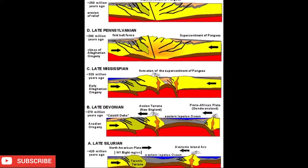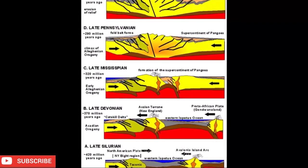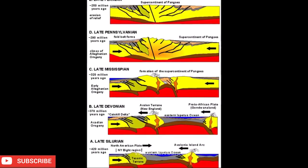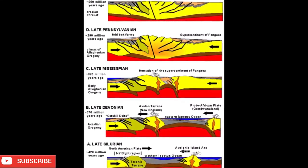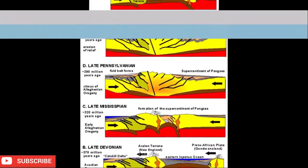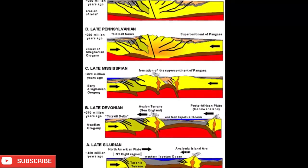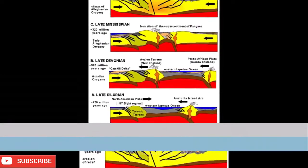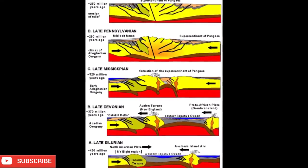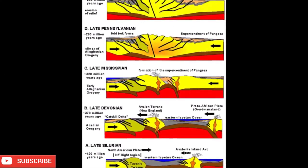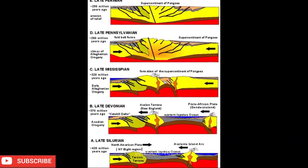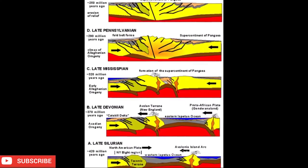Pangea or Pangaea was a supercontinent that existed during the late Paleozoic and early Mesozoic eras. It assembled from earlier continental units approximately 300 million years ago, and it began to break apart about 175 million years ago. In contrast to the present earth and its distribution of continental mass, much of Pangaea was in the southern hemisphere and surrounded by a superocean.